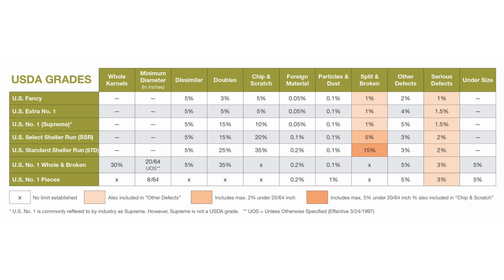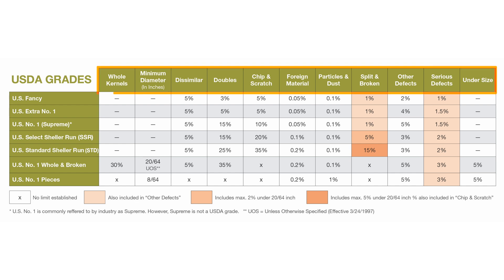Under the USDA almond grades, there are five grades of whole kernels and two grades for broken and pieces. Each grade is defined by a set of quality parameters and tolerances within those parameters.